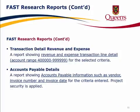Transaction Detail Revenue and Expense Report: a report showing revenue and expense transaction line detail for the account range 400000 through 999999 for the selected criteria. The Accounts Payable Details Report: a report showing accounts payable information such as vendor, invoice number, and invoice date for the criteria entered. Project security is applied.